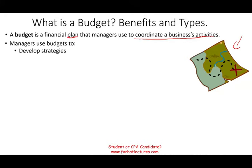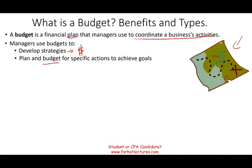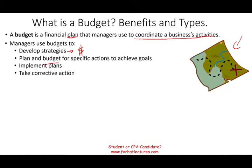We use the budget to develop strategies — for example, increasing sales, expanding our market, or increasing our margin. We then plan and budget by interpreting this strategy in figures and numbers so we can take specific actions to achieve it. If we want to increase sales by a million dollars or 10 percent, we express that in a budget so we can implement the plans and, when needed, take corrective actions.